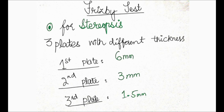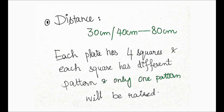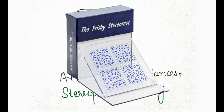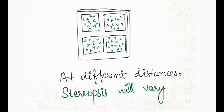Each plate has four squares, and you can see how the Frisbee plates look. They have different thicknesses: one is 6 mm, another is 3 mm, and the third is 1.5 mm.